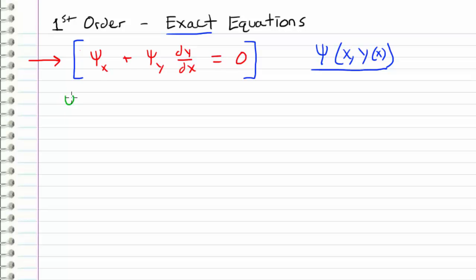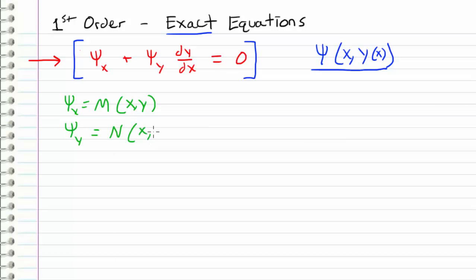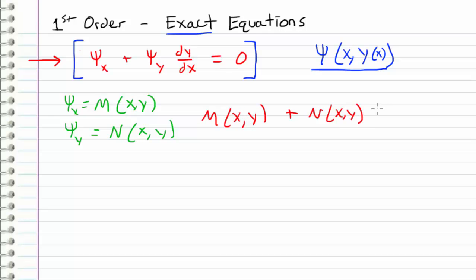We define psi sub x as a function M of x and y, and we define psi sub y as the function N of x and y. So we can rewrite the equation as M(x,y) plus N(x,y) times dy/dx equals zero. This is how we arbitrarily define an exact equation.